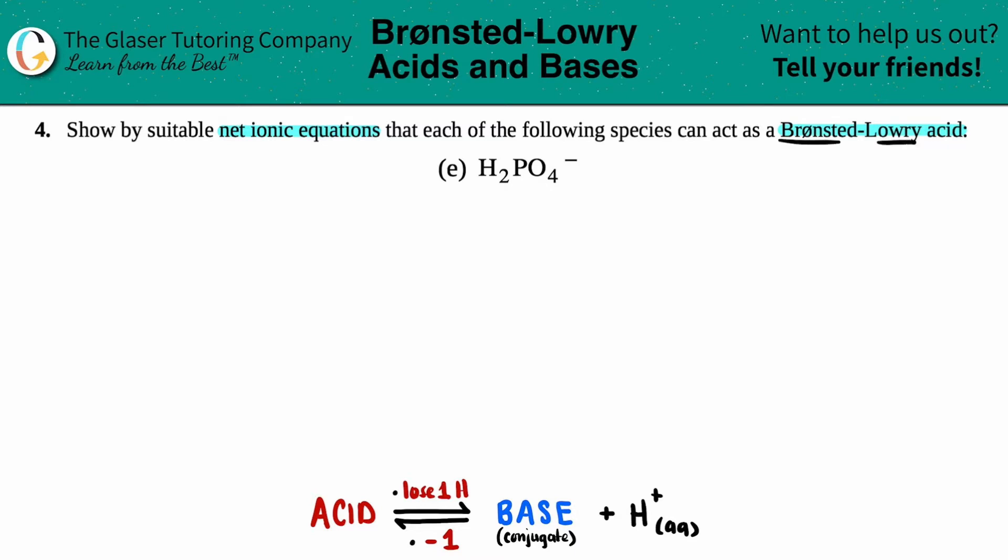Brønsted and Lowry were two scientists that basically came up with the same idea independently. They stated that acids always donate a hydronium ion, aka a H+.